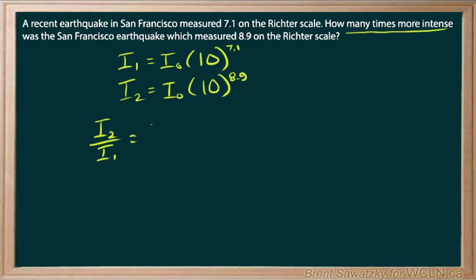And we look at it and our equation for the second one, 10 to the 8.9. And our equation for the first one, 10 to the 7.1. And so we can see that those base intensities, those just cancel out.